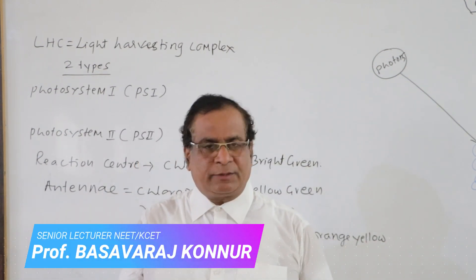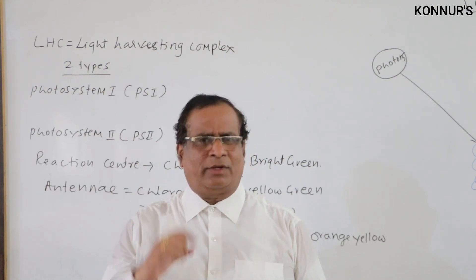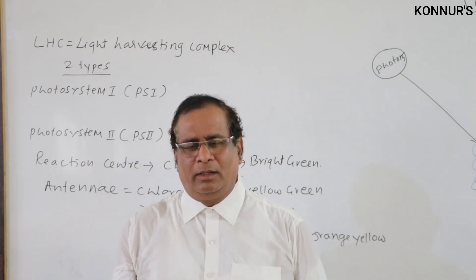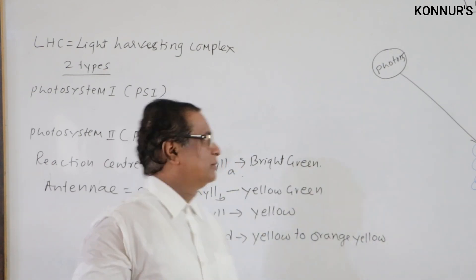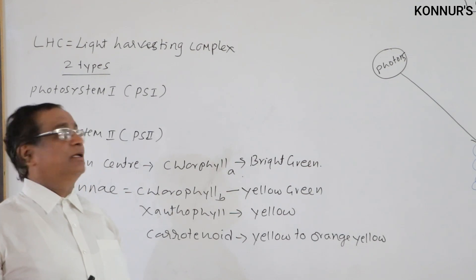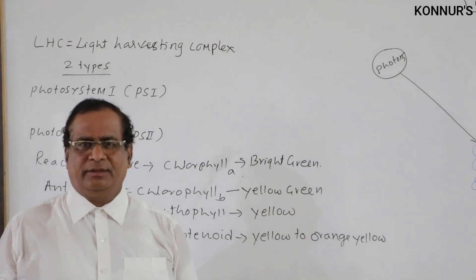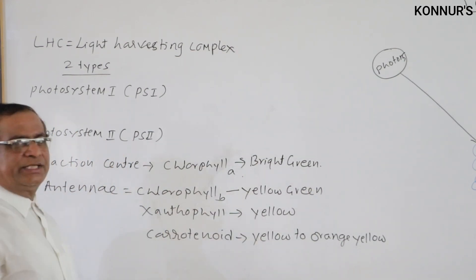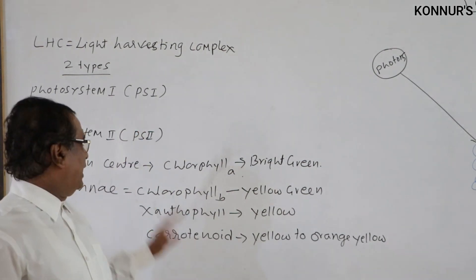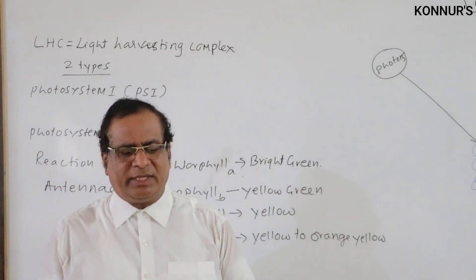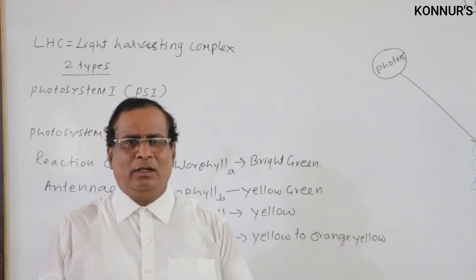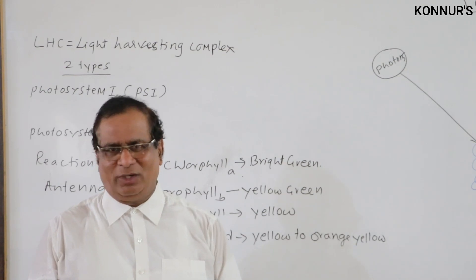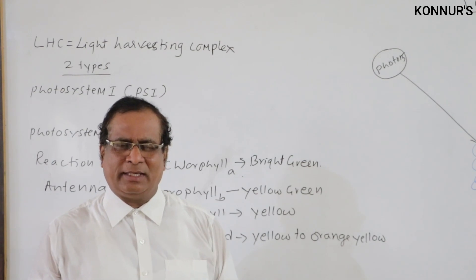Light reactions take place in grana. You know about the structure of granum — it consists of many thylakoid membranes placed one above the other. In those thylakoid membranes we find LHSC, which means Light Harvesting Complexes. These light harvesting complexes are of two types: one is Photosystem I and another is Photosystem II, in short form PS I and PS II. They are named first and second mainly based on the order of their discovery.